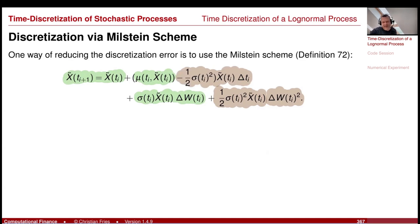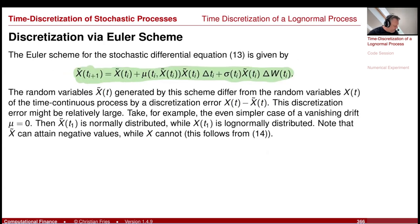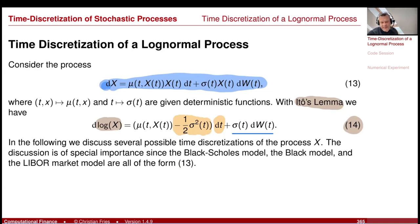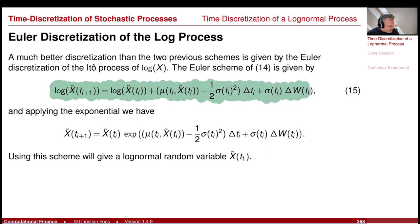A good trick is to not discretize this process with an Euler scheme, but instead move to the logarithm, create the Euler scheme for the logarithm, and then transform back using the exponential function. We call this the log Euler scheme. Applying the Euler scheme to d log X gives: log X at the next point = log X at the previous point + (mu − 1/2 sigma²) Δt + sigma * ΔW — now without the additional X factor.